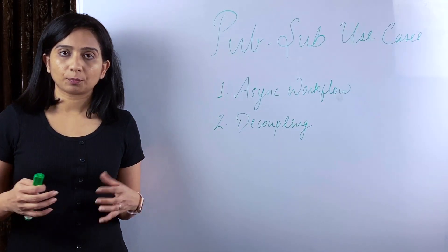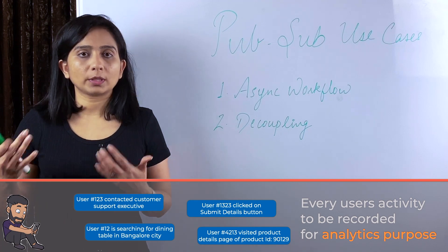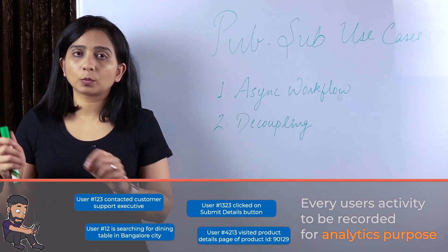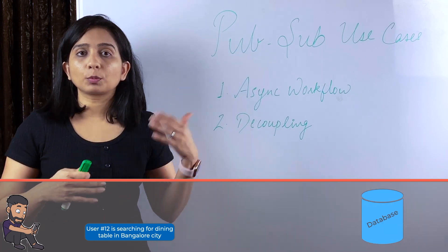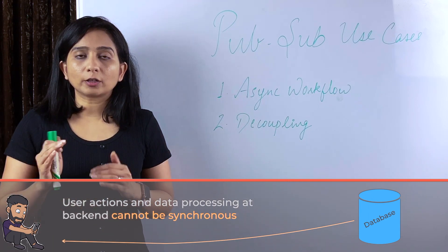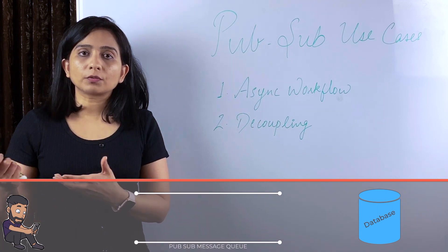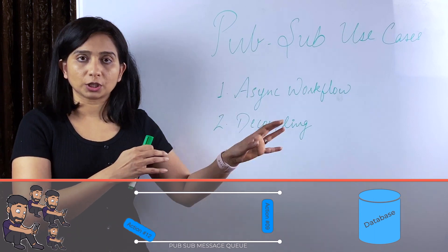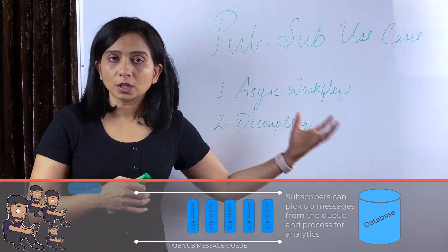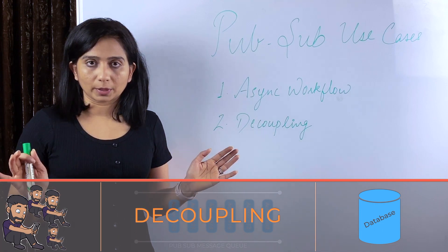The second use case is decoupling. For example, a website wants to track every click and user action for analytics. Think about how many events a user generates per minute — the UI cannot be blocked waiting for the backend to process each event. With PubSub messaging, all user events are queued into the publisher's input channel, and subscribers pick those messages and save them to a data store, keeping the UI unblocked. This is one of the foundational benefits of queuing patterns: decoupling.